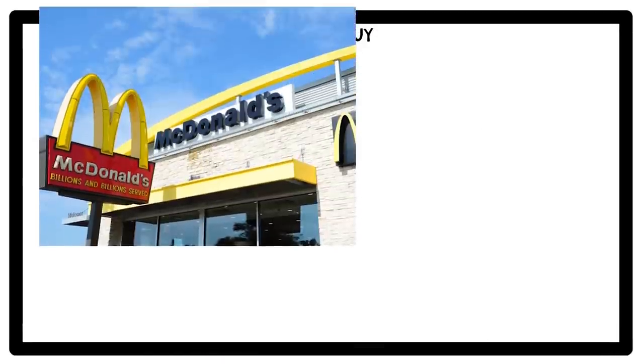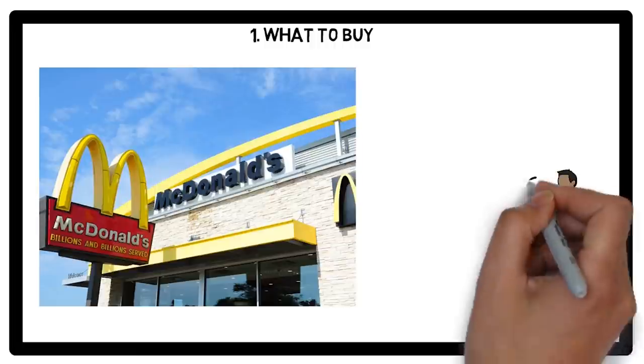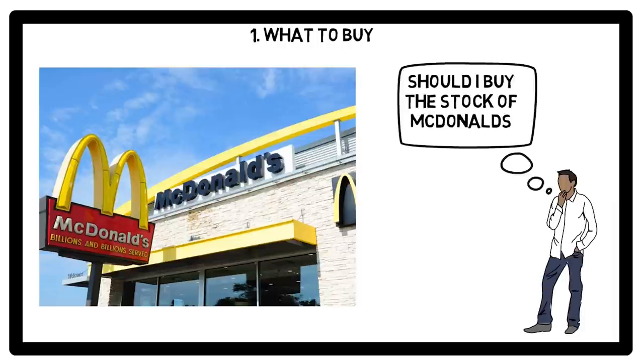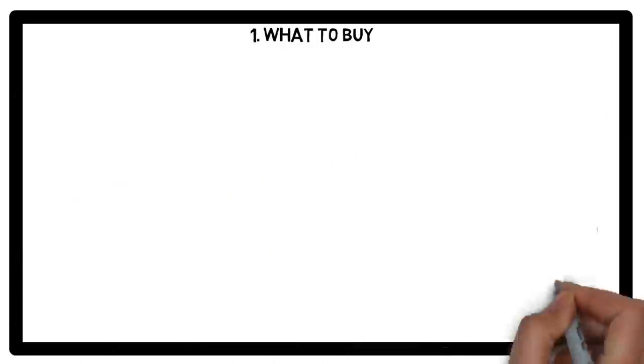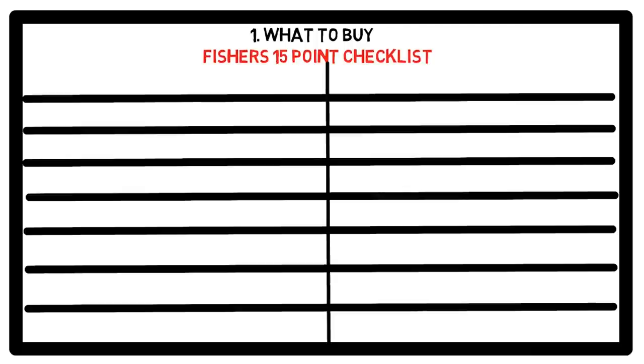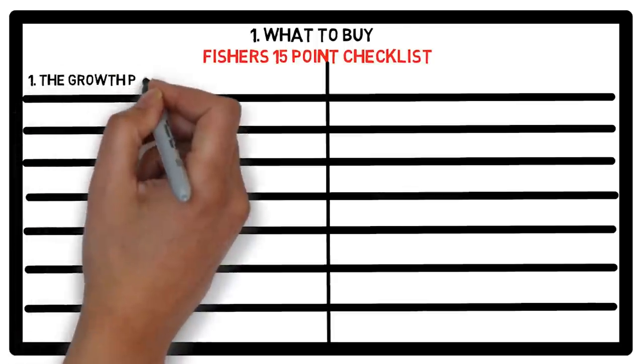Lesson number one: What to buy? A business has attracted your attention for whatever reason. How would you come to a conclusion that it is worthy of investment of your hard-earned money? Phil Fisher lays out a 15-point checklist to look for when you are looking for a potential investment. These are: First, how big is the potential?